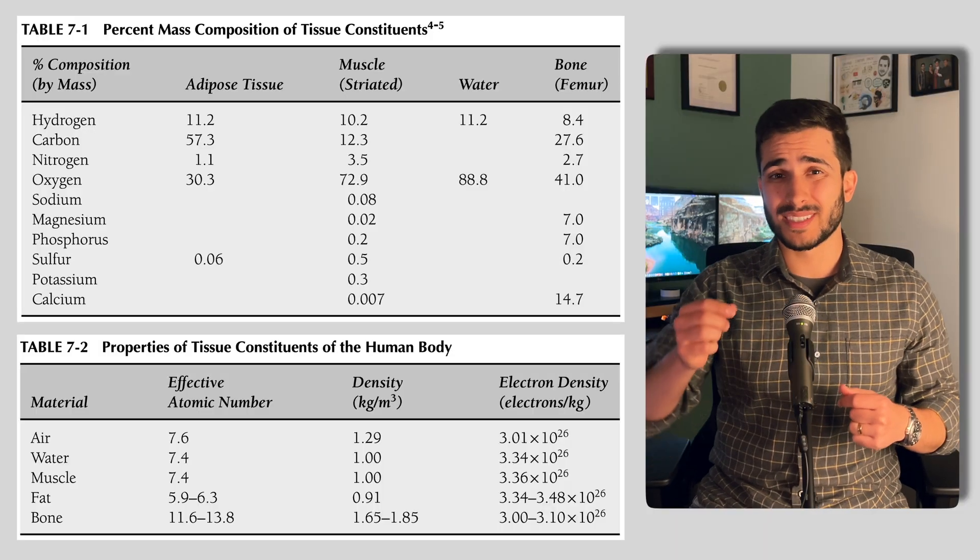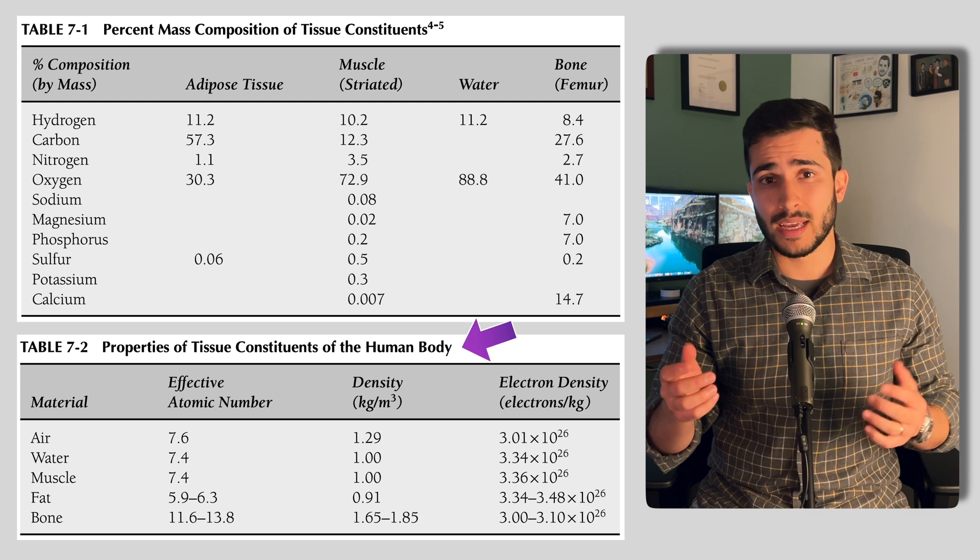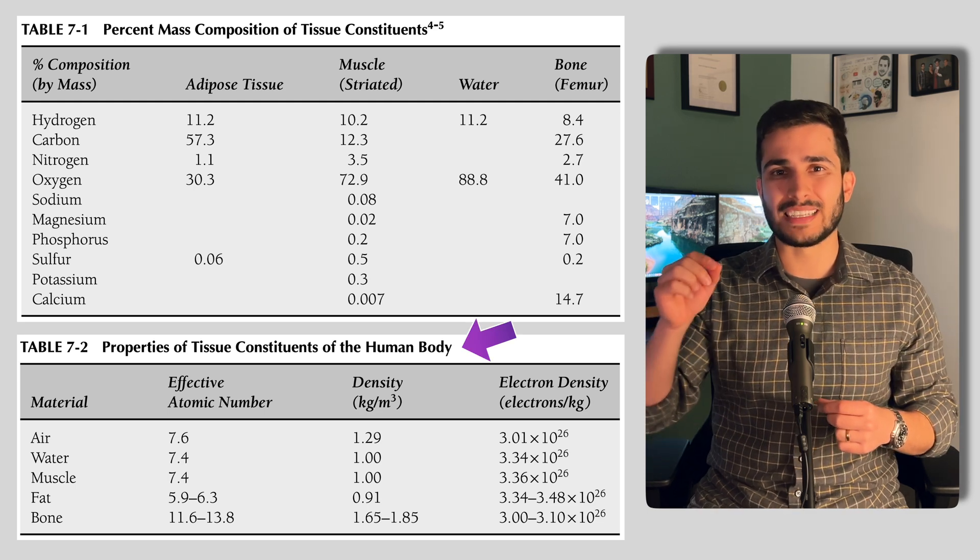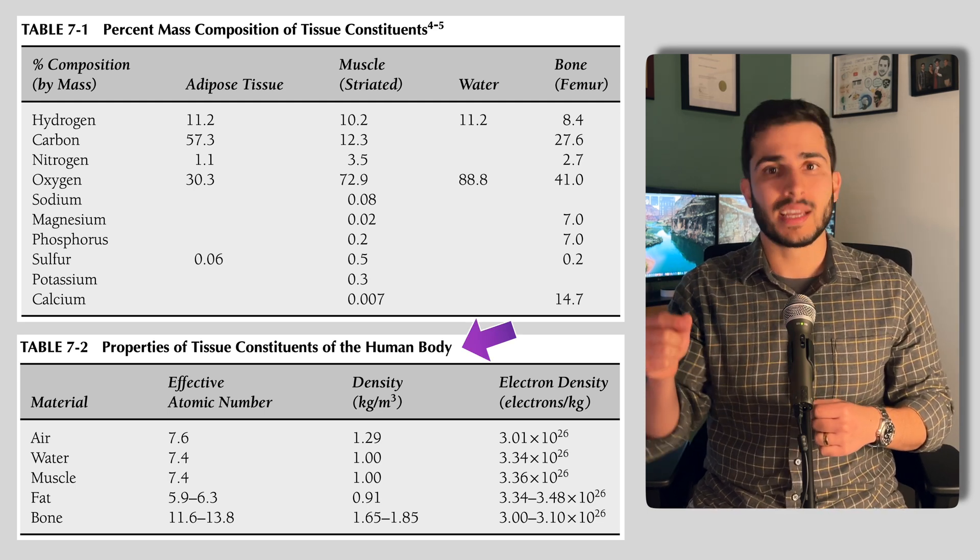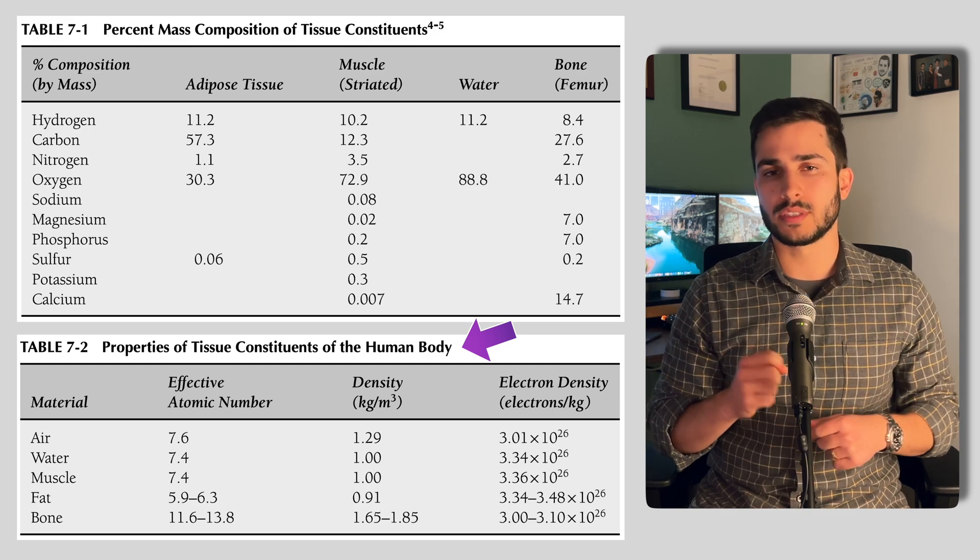And sometimes in order to see and distinguish the tissues better, we introduce contrast in the body, which is usually iodine-based. And so here's a table that summarizes the percentage mass composition for the different tissues in our bodies. And also in this other table, it's showing the effective atomic number, the mass density, and the electron density of those materials. You'll see why these are relevant in a minute.